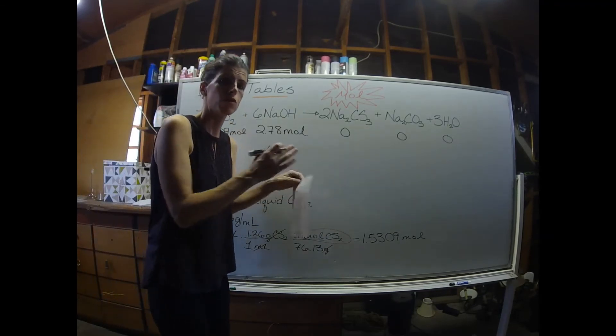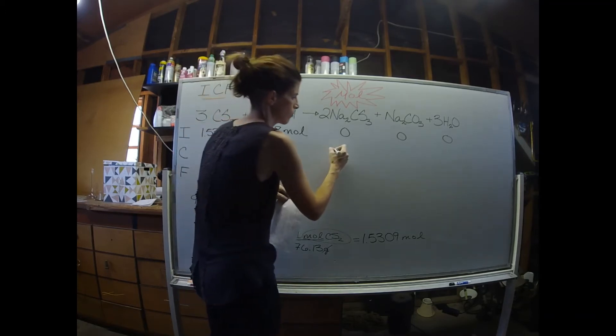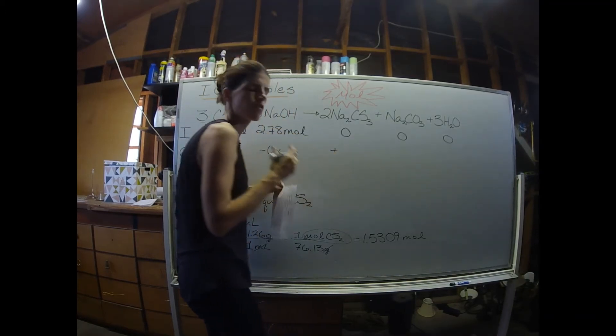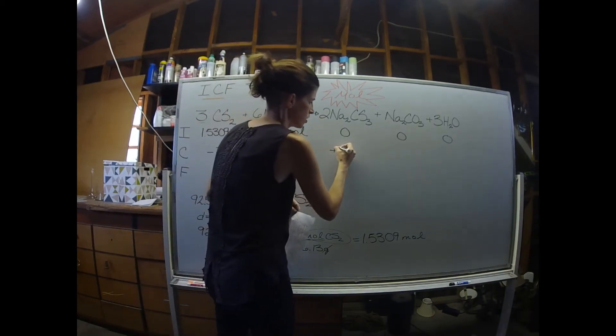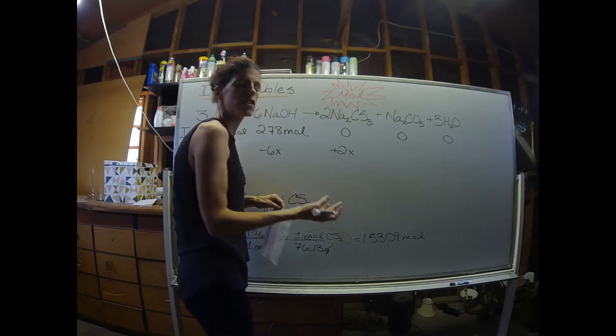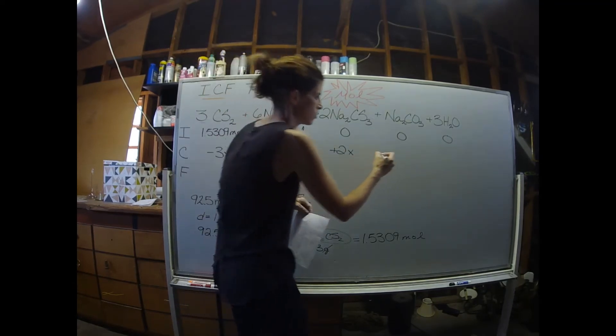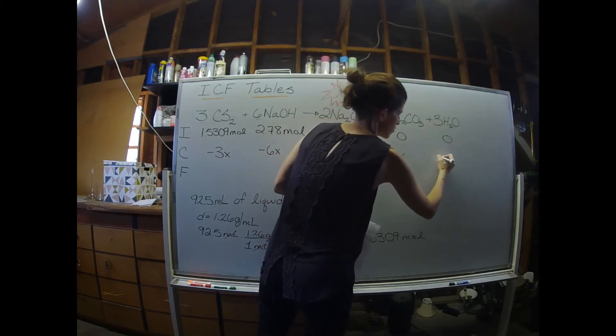Products will start forming as the reaction continues. So we're going to do pluses over here to represent the formation of product. You're still going to grab your coefficient, so this will be plus 2x. Coefficient is understood there to be 1, so you can do plus 1x, which is plus x, and then I have another 3.